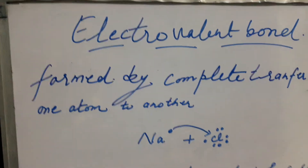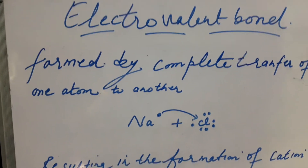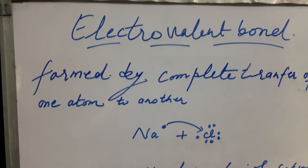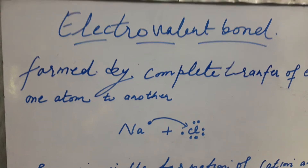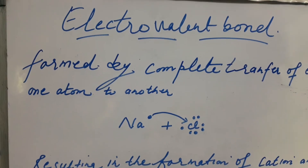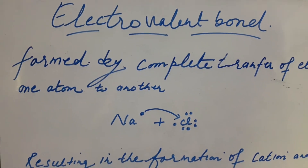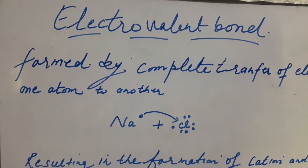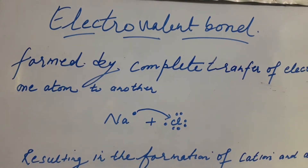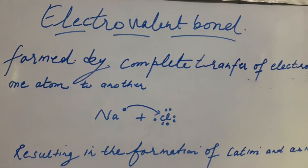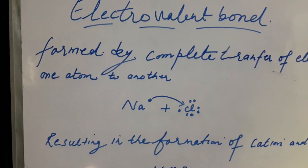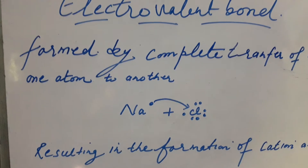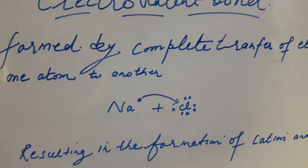Good morning students. Today I will explain about the electrovalent bond. Electrovalent bond is formed by the complete transfer of an electron from one atom to another.